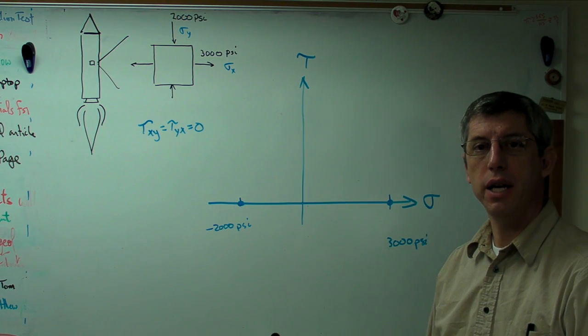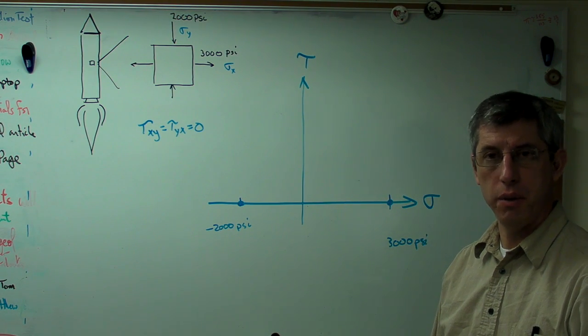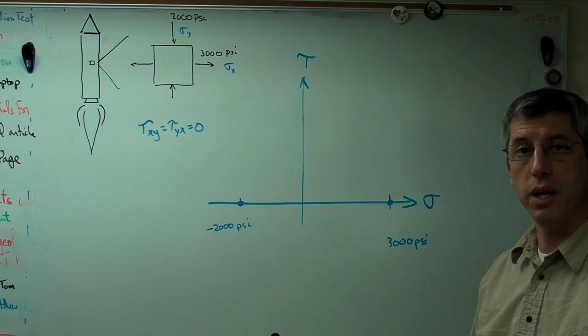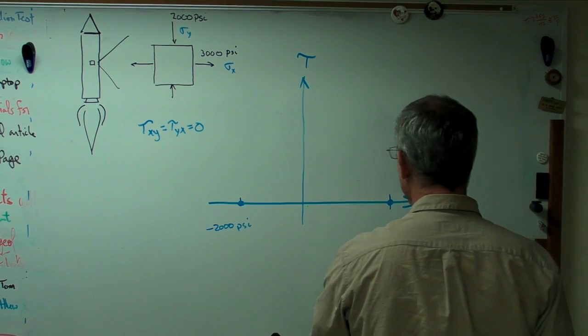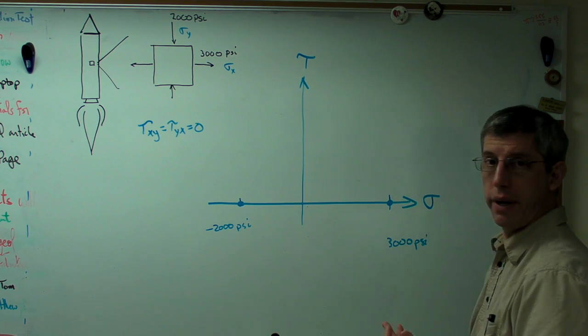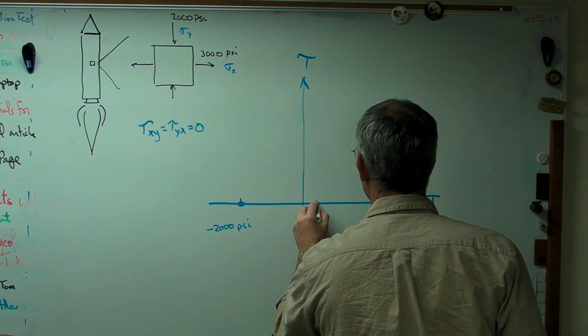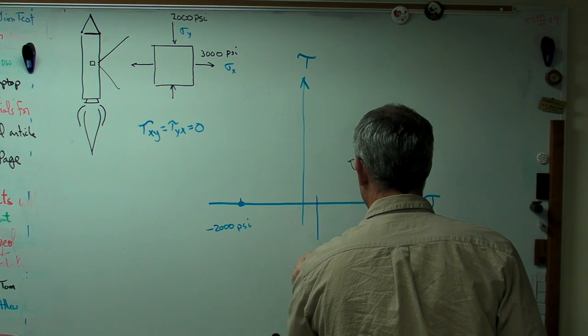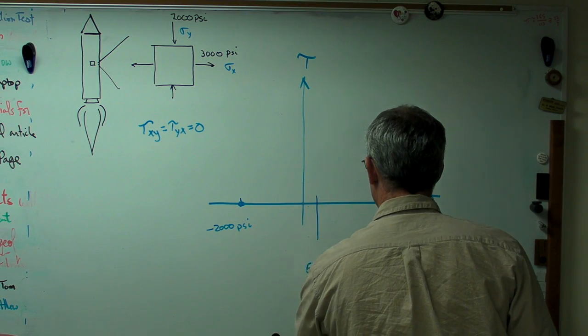All right. Next thing I need to find out is what's the midpoint between the two stresses in the x direction. Well, not too surprising. If you take 3,000, subtract 2,000 from it, you get 1,000. Take the average. That's 500. So right about there. That's 500 psi.